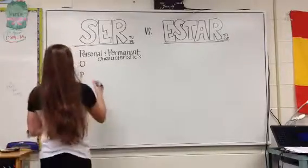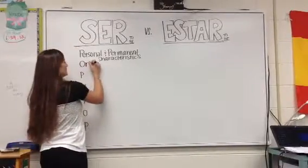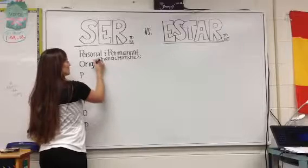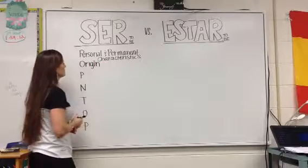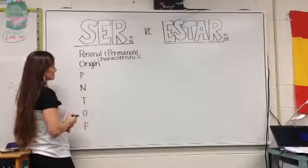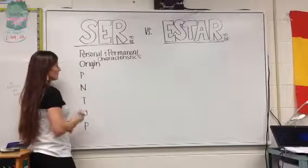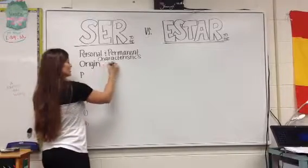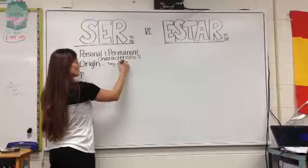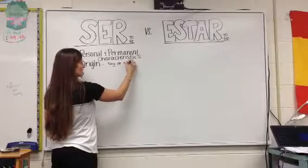The next letter O is for origin — where you're from. You don't say 'estoy de Nebraska'; you would say 'soy de Nebraska.'